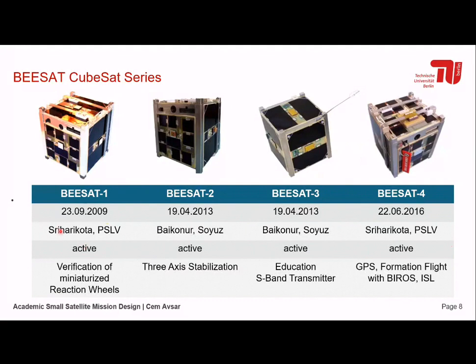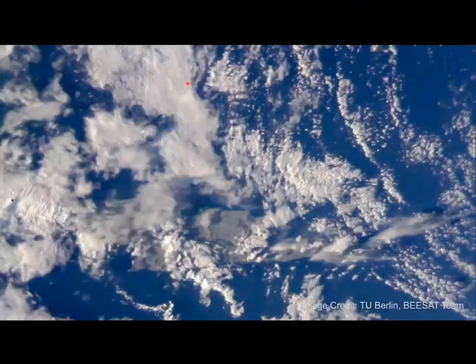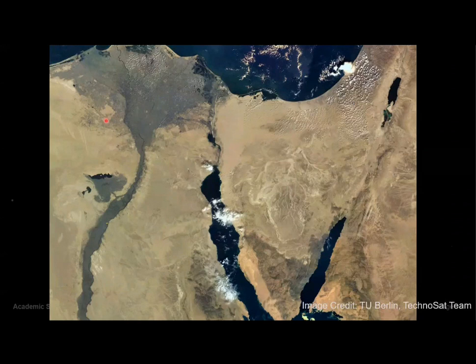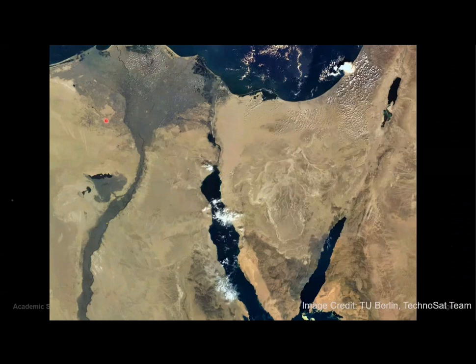The first CubeSat was launched in 2009 from India and verified different equipment, especially miniaturized reaction wheels built in collaboration with industry — tiny motors with masses that can rotate the satellite in every direction, enabling three-axis stabilization. BEESAT-3 had a slightly different purpose: it was fully educational, built only by students. The images show quite good quality; from a 20-kilogram satellite like TechnoSat, the quality can be improved drastically with larger instruments.